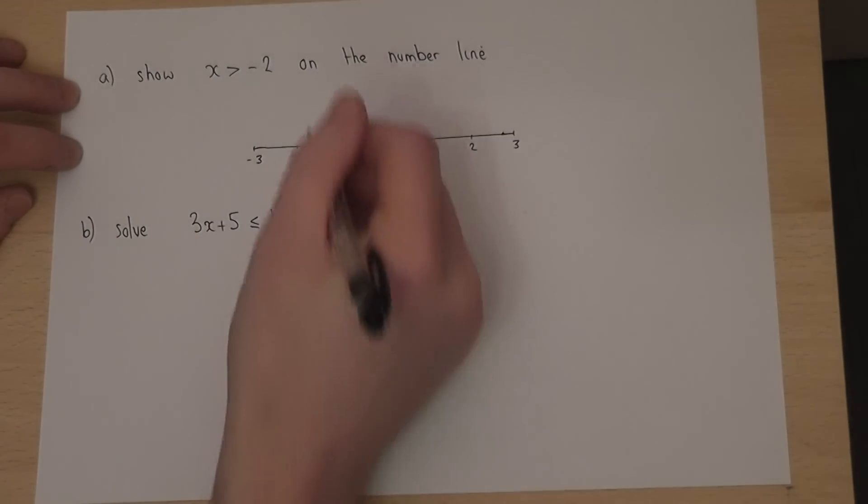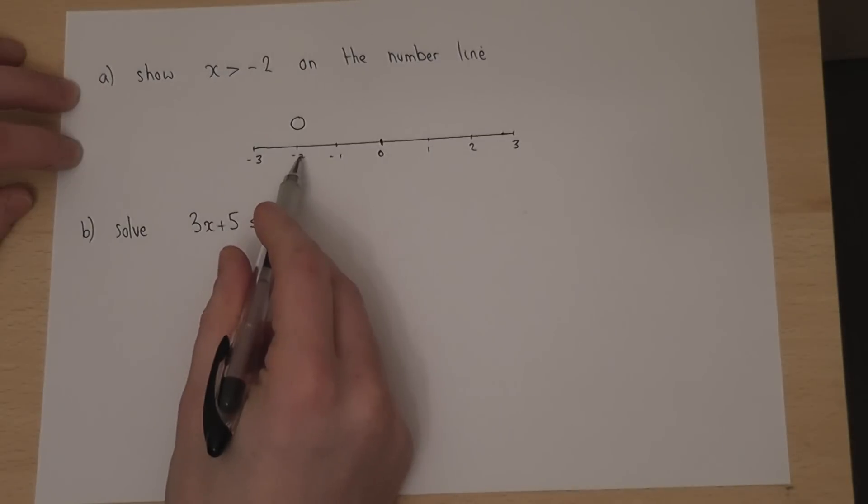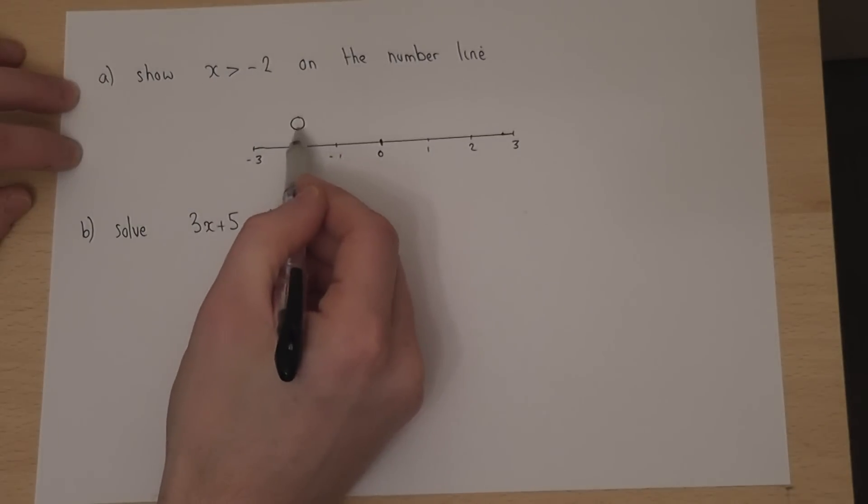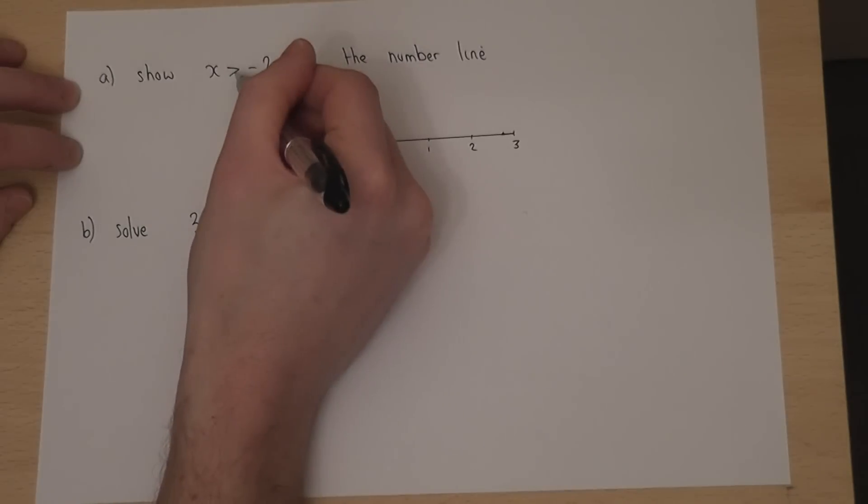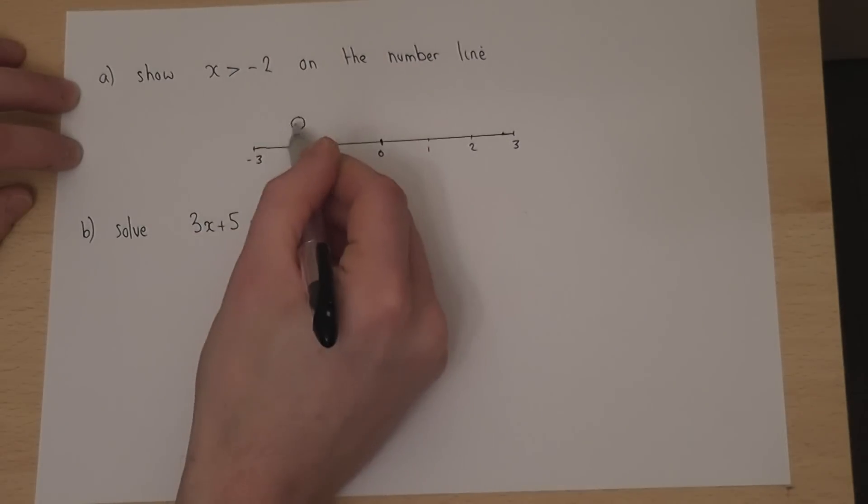So, I draw an open circle above minus 2. The open circle denotes that we cannot equal minus 2. If it was like so, we would shade the circle in.